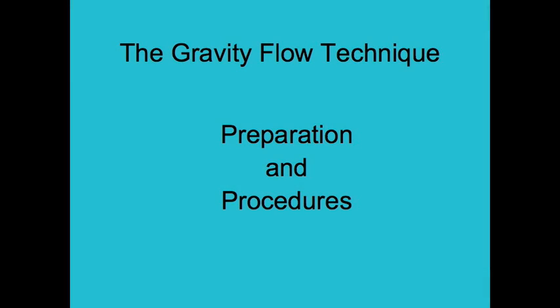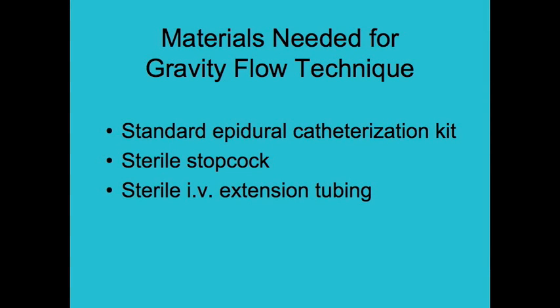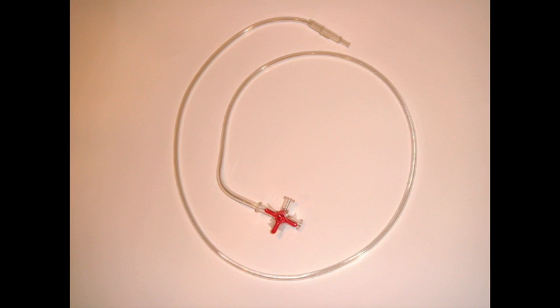The Gravity Flow Technique is quite simple to perform. We will now review in detail the preparation and procedures necessary to master it. To perform epidural analgesia or anesthesia using the Gravity Flow Technique, the only additional equipment needed, besides a standard epidural catheterization kit, is a sterile stopcock and sterile intravenous extension tubing. We prefer to use intravenous extension tubing with an attached stopcock, opened onto the epidural kit prior to beginning the procedure. Alternatively, a separate sterile stopcock and sterile extension tubing may be used.